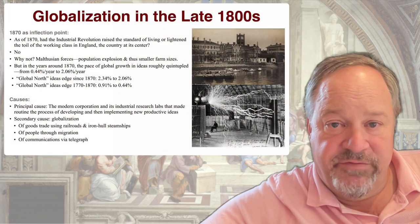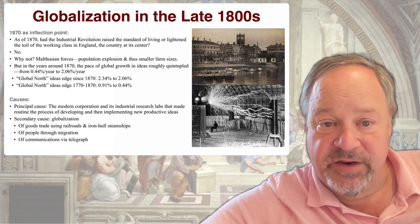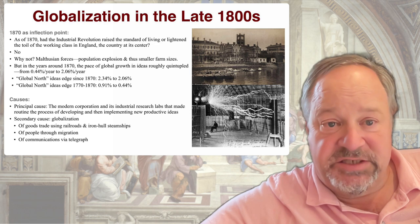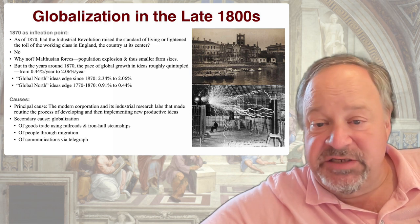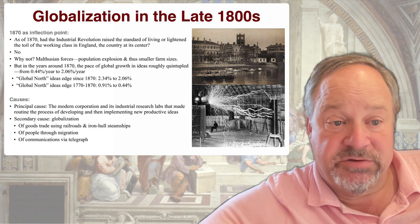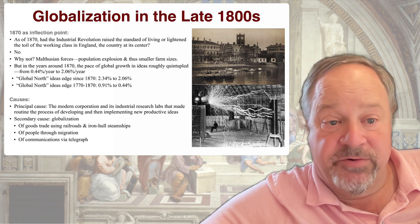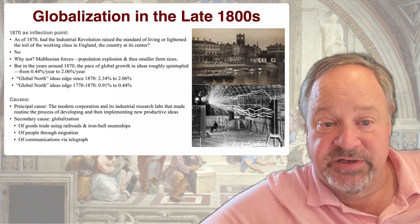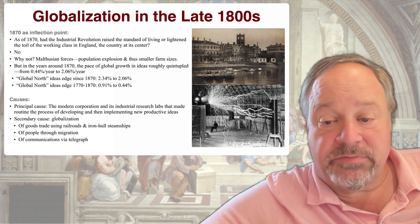Let's look at one of our three key drivers of the long 20th century starting in the late 1800s: globalization, with 1870 as the inflection point. As of 1870, had the Industrial Revolution that had been going on for a century raised the standard of living or lightened the toil of the working class in England — the country at the center of the industrial revolution — or indeed anywhere else? The answer seems to be no, because of Malthusian forces.